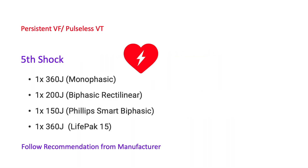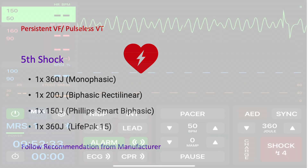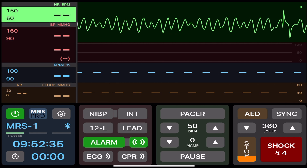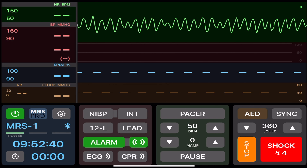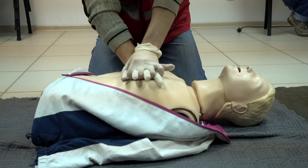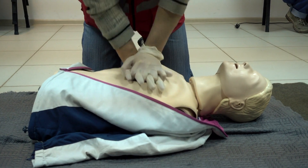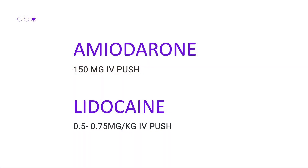After two minutes, stop, switch, and analyze. If the rhythm is still VF, deliver defibrillation number five — follow the manufacturer's recommendation. Give the amiodarone prepared earlier; this time the dose is lower at 150 milligrams. You can also use lidocaine at 0.5 to 0.75 milligrams per kilogram.